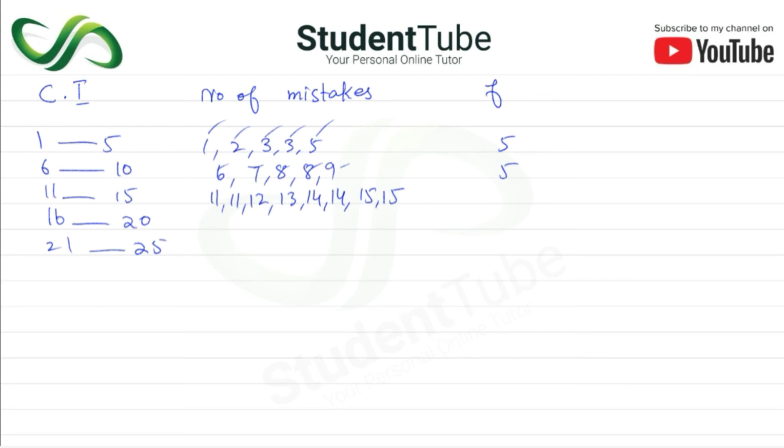In the last thing, we have to tell the size of class interval. Size of class interval is 1 to 5, which is 5. And number of class intervals, which we asked in the question: 1, 2, 3, 4, 5. The answer is 5.